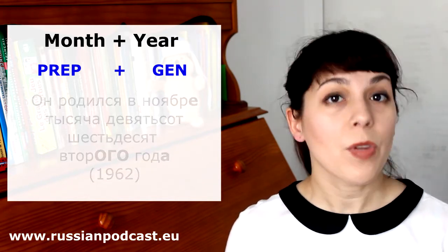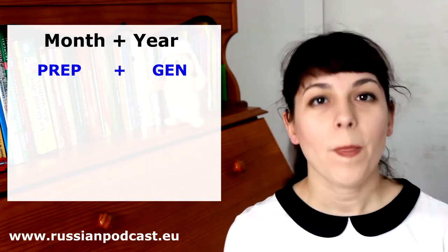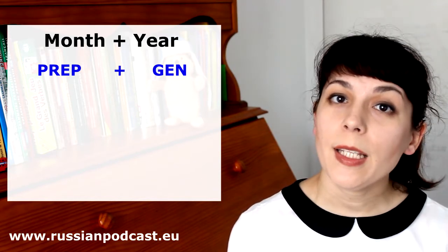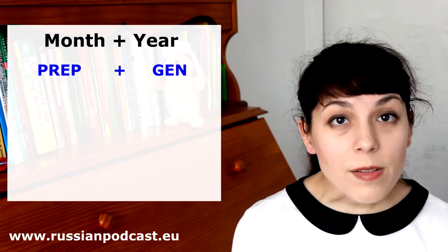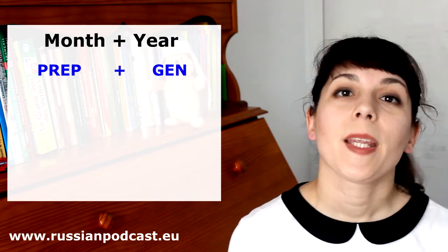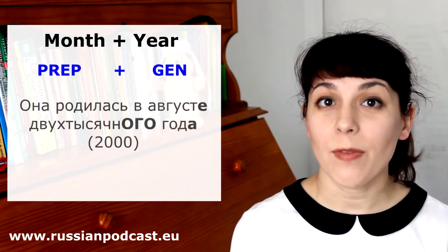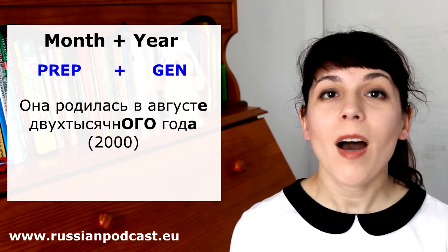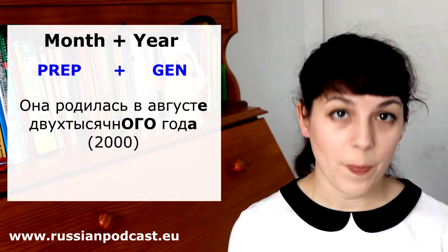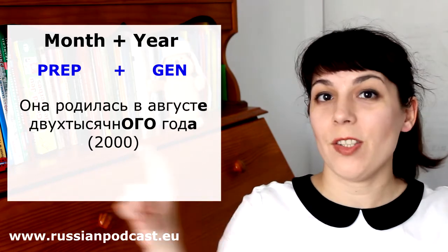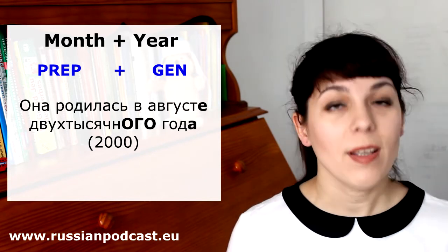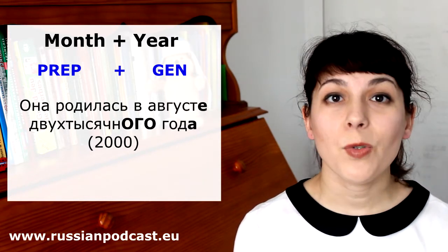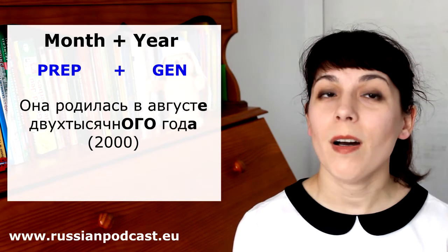How about the year 2000? It's a bit special. For example, she was born in August 2000: она родилась в августе двухтысячного года. So двухтысячный is just one word and we change it to двухтысячного.